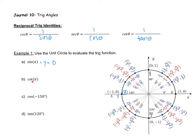For cotangent, that is the reciprocal of tangent. Tangent is y over x, so cotangent is x over y. Going to pi, my x value is negative one and my y value is zero. Anytime I have zero in the denominator, the whole expression is undefined. We can't divide by zero, so cotangent of pi is undefined.